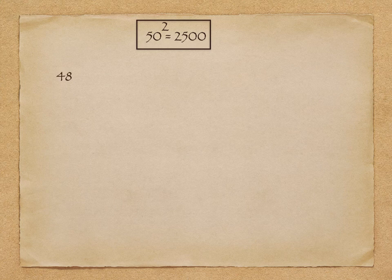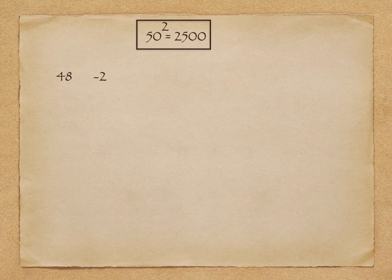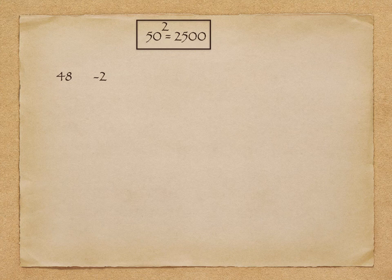In the first part, we are going to consider all the numbers which are less than 50. First number is 48. 48 is 2 less than 50. To get the answer, I will subtract this 2 from the first two digits of 2500, that is 25 minus 2, which is 23. And the square of 2 in two-digit form is 04, so 2304 is the answer.